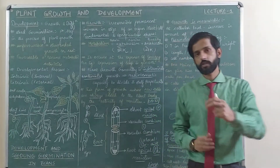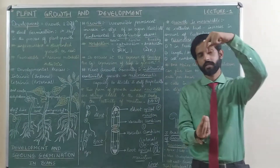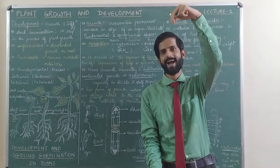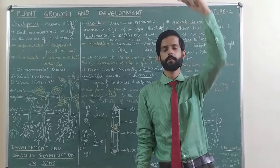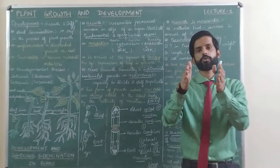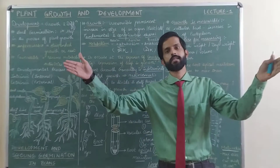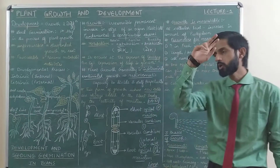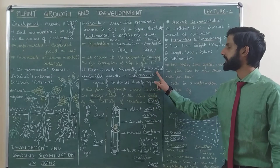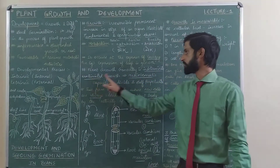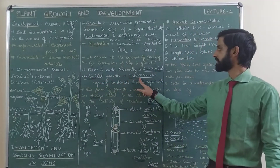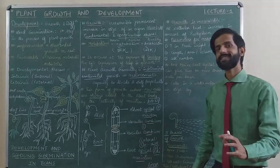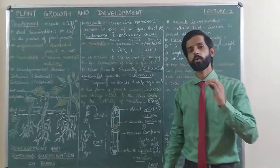To summarize: apical meristematic tissue is responsible for primary growth — that is increase in height of a plant. Lateral meristematic tissue is responsible for secondary growth — that is increase in thickness. The tree's meristematic tissue keeps it growing indefinitely, which is indeterminate and unlimited growth, also called open form of growth.